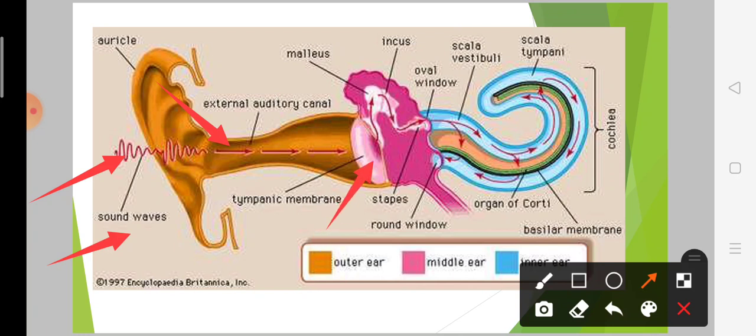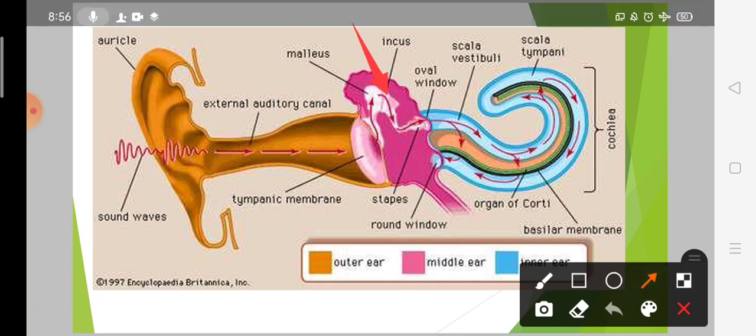Then the sound waves travel through the external auditory canal. The eardrum is part of the middle ear. The eardrum vibrates and is connected to the malleus. The malleus is connected to the incus, and the sound waves pass to the incus.